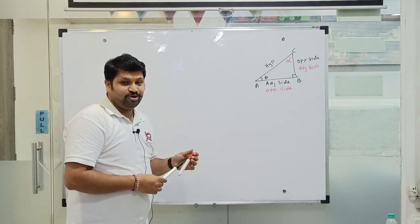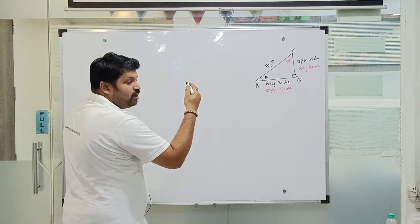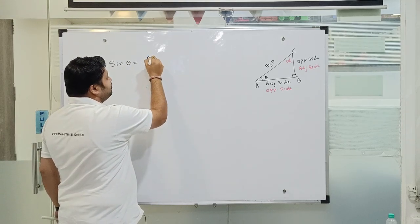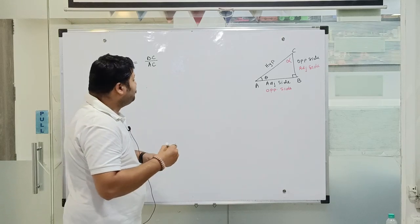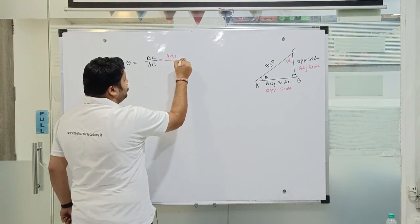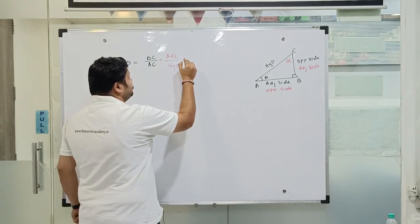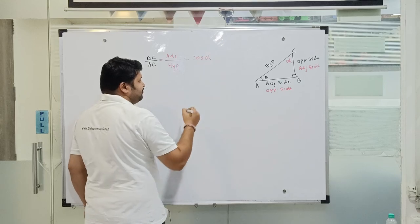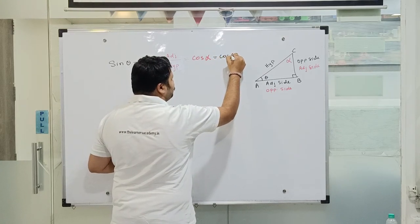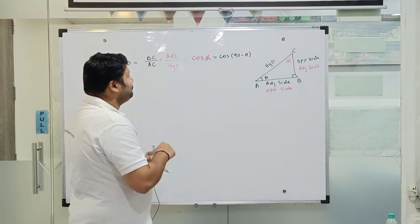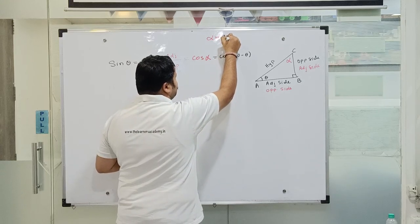Now let us see how these ratios are going to change. Sine theta is opposite side upon hypotenuse, so that is BC upon AC. However, BC upon AC for alpha is the adjacent side upon hypotenuse, which by definition is cos alpha. So I can say that sine theta is equal to cos of 90 minus theta.